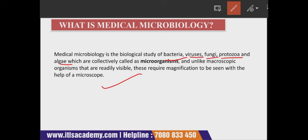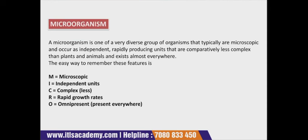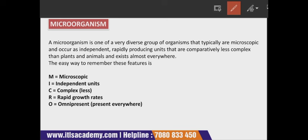In microbiology there are different types of microscopes: simple microscope, compound microscope, electron microscope, and transmission electron microscope. A microorganism is one of a very diverse group of organisms that are typically microscopic, occur as independent rapidly reproducing units, are collectively less complex than plants and animals, and exist almost everywhere. A useful acronym to remember: M for microscopic, I for independent unit, C for complex, R for rapid growth rate, and O for omnipresent.